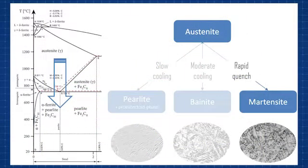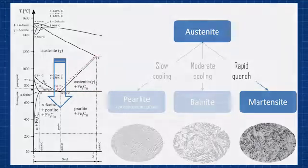For example, the specimens we have at room temperature most likely have a BCC structure before heating. After heating beyond the austenitizing temperature, we can transform the structure to FCC, thus forming the austenite present in the steel.